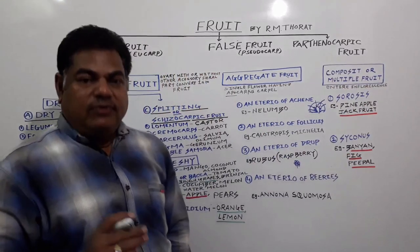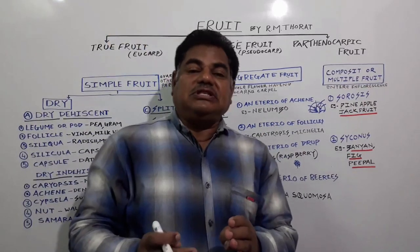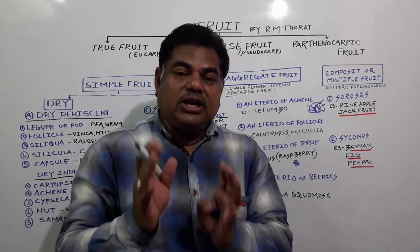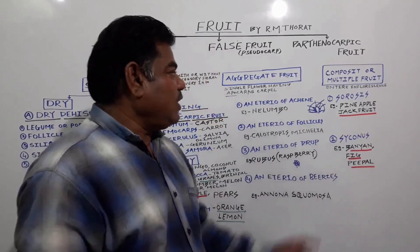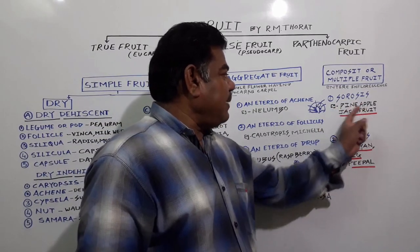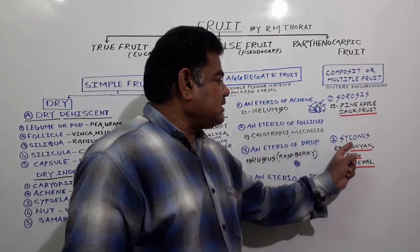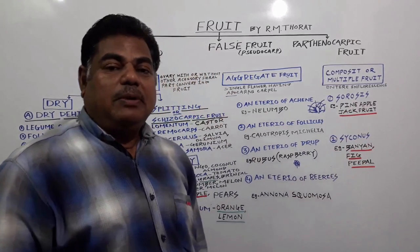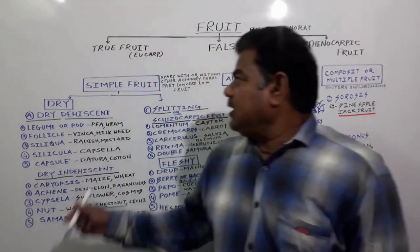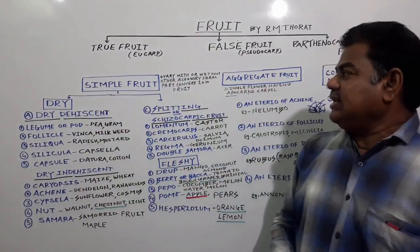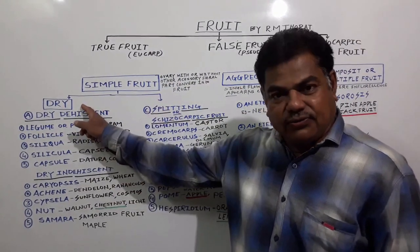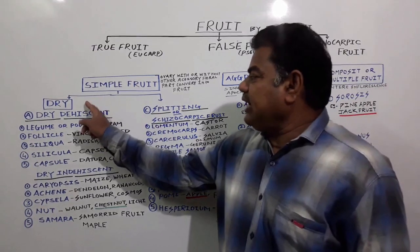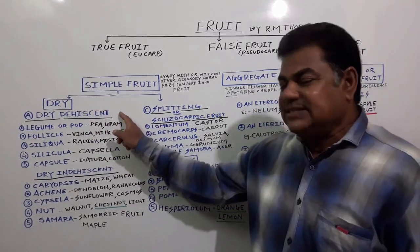The third type is composite or multiple fruit, in which the entire inflorescence gets converted into a fruit. For example, sorosis in the case of pineapple and jackfruit; syconus in the case of banyan, fig, and Ficus religiosa. Simple fruit is further differentiated into dry fruit and fleshy fruits.